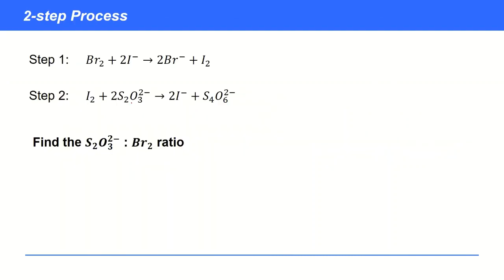Here's a concrete example. We've got a two-step procedure. First step, bromine reacts with iodide, releasing iodine. That iodine reacts with thiosulfate in this reaction here. It's a typical two-step redox titration.